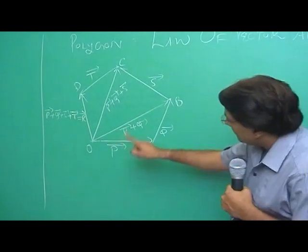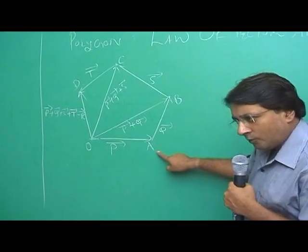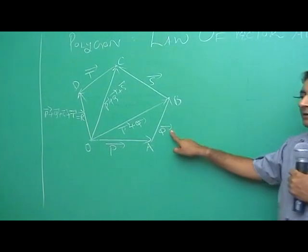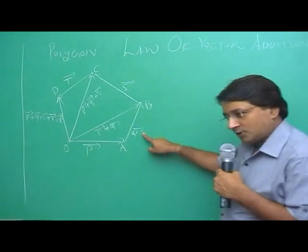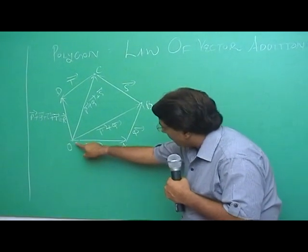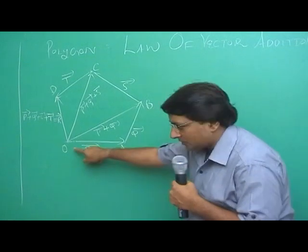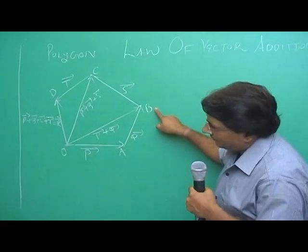Look students, vector p is represented by OA completely in magnitude and direction. AB is represented completely in magnitude and direction, that is q. Now look, OA, AB, OB is p plus q. This is nothing but a triangle law of vector addition.